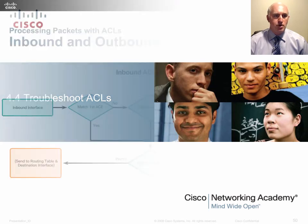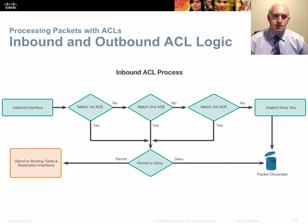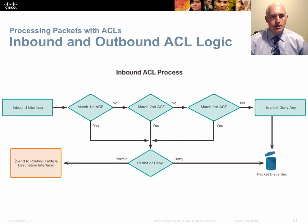For troubleshooting ACLs, think through a simple logic flowchart. A packet coming in on an inbound ACL hits the ACL before routing. It looks at the first statement — does the IP address or protocol match? If it does, is the statement a permit or deny, and the action is followed. If it doesn't match, it moves to the next statement. If no statement matches, the packet is implicitly denied — all this happens before it's sent to the routing table.